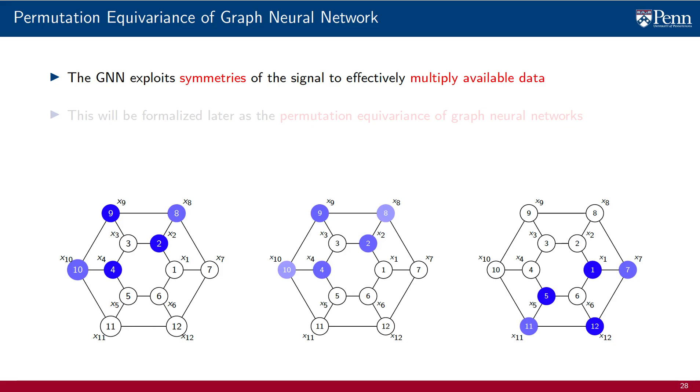There are symmetries in signals that make seemingly disparate examples equivalent, like it happens for the signals on the right and the left. They are different, but they can be processed in the same manner. The symmetries effectively multiply the size of the dataset.